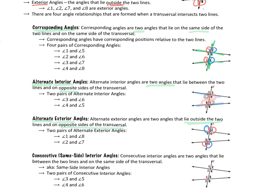Our fourth angle relationship formed by a transversal intersecting two lines is consecutive interior angles. Interior means inside the two lines, and consecutive means same side — next to each other on the same side of the transversal. You may see it called 'co-interior' but you should write 'consecutive interior.' There are two pairs: angles 3 and 5 on the left side of the transversal, and angles 4 and 6 on the right side.